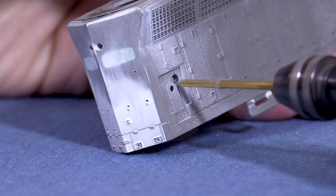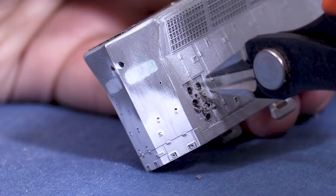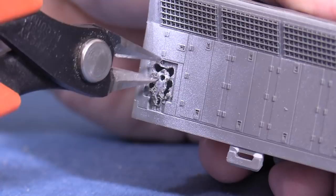For this next step, I'll use my Xuron sprue cutters. These are specifically made to cut plastic. I'm careful not to use them on anything else because it'll ruin the blades. I'll use the sprue cutters to cut the plastic in between the holes.